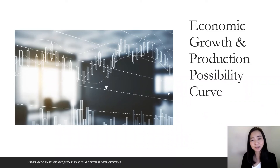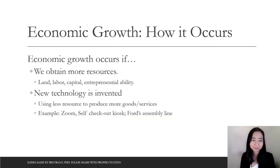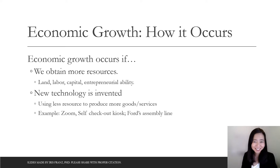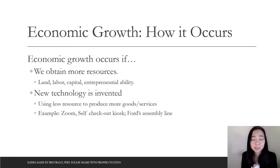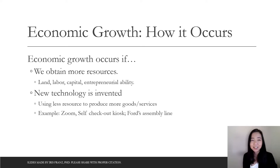Next, we're going to explain economic growth with our production possibility curve, PPC. Economic growth occurs if you get more resources. Resources are land, labor, capital, and entrepreneurial ability — or if you have better technology.